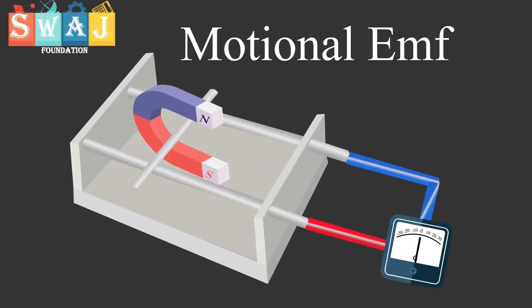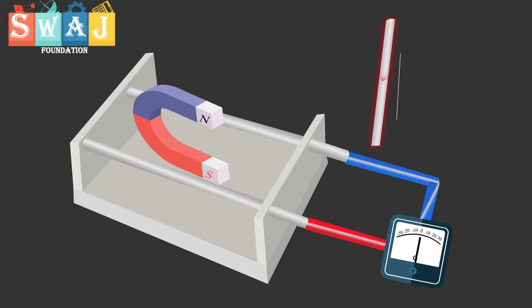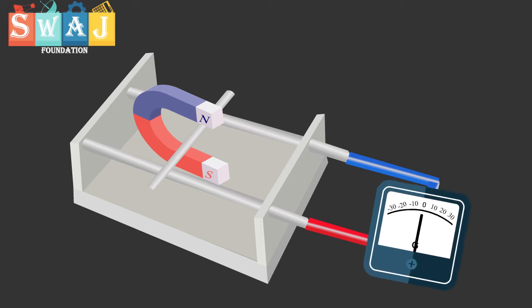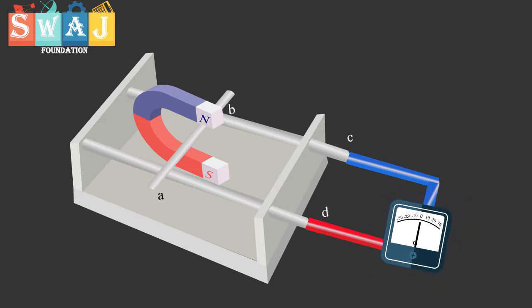Motional EMF. Consider a conducting rod of length L placed on two parallel metal rails separated by a distance L. A galvanometer connected between the ends C and D of the rails. This forms a complete conducting loop ABCDA.